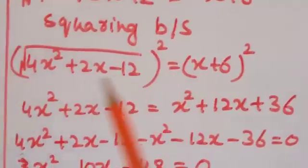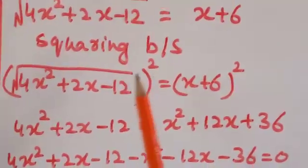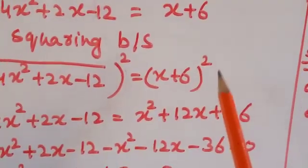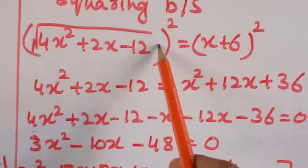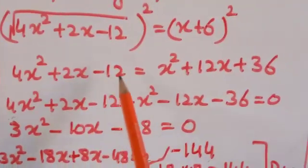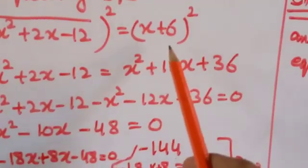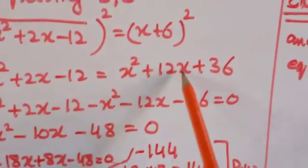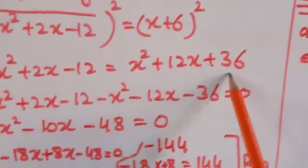Again squaring both sides: [√(4x² + 2x − 12)]² = (x + 6)². The radical sign cancels out, giving 4x² + 2x − 12 = x² + 2·x·6, according to the first formula.